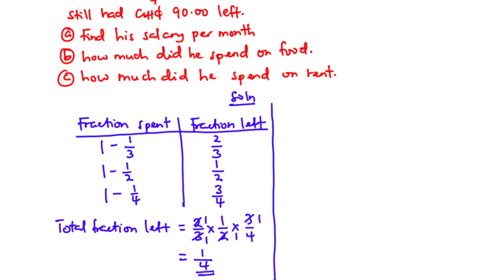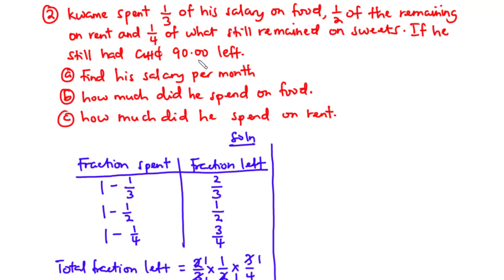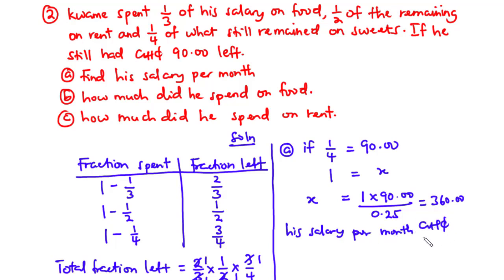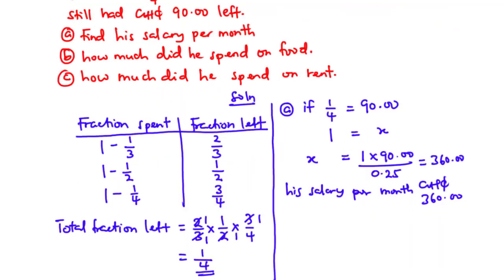The total fraction left of one quarter represents the amount of 90 Ghana cedis. To find his salary per month: if one quarter equals 90 cedis, then the total fraction which is one equals x. So x equals one times 90 divided by one quarter, which is the same as 0.25. This equals 360 Ghana cedis. Therefore his salary per month is 360 Ghana cedis.